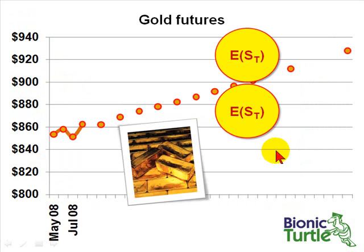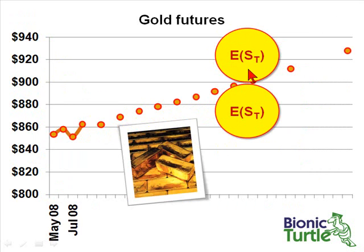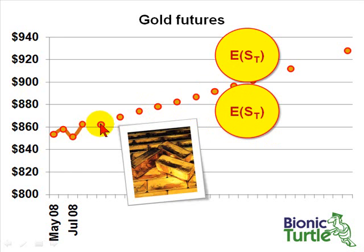Similarly, if we look at gold futures, we've already said that the forward curve is in contango. If the expected future spot price is up here, then the forward curve is in contango and normal backwardation. If the expected future spot price is here, the forward curve is in contango and normal contango.